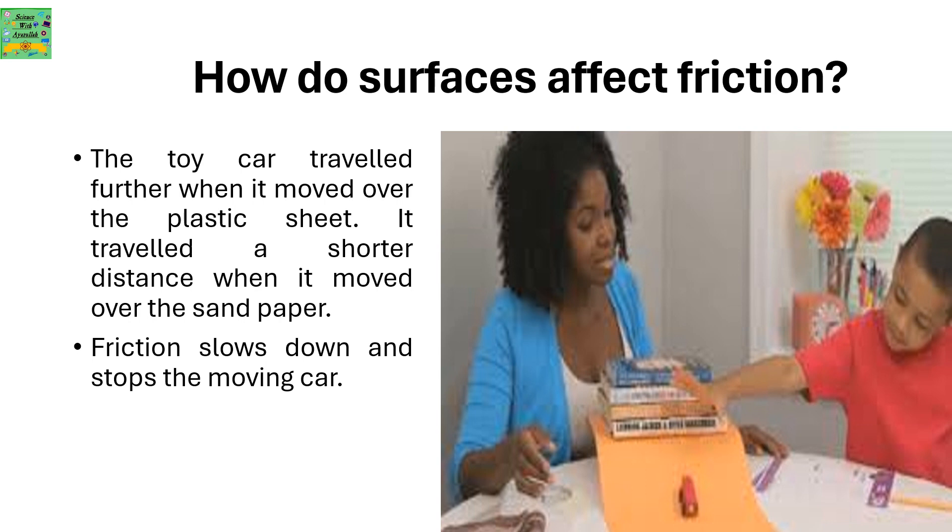How do surfaces affect friction? The toy car traveled further when it moved over the plastic sheet. It traveled a shorter distance when it moved over the sandpaper. Friction slows down and stops the moving car.